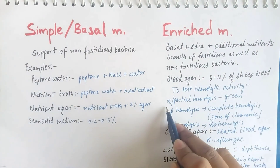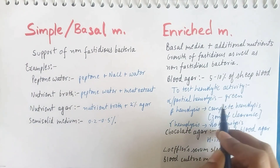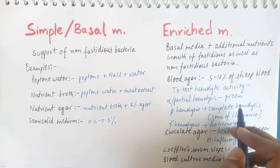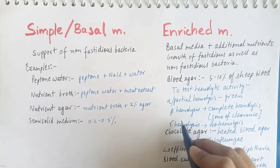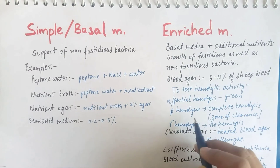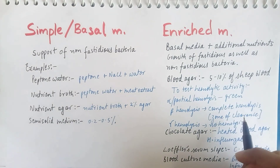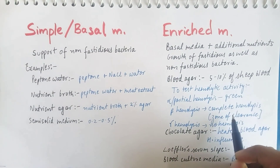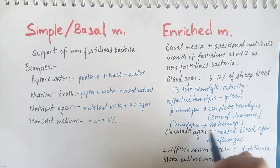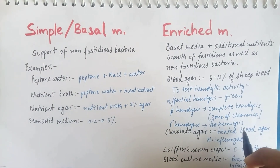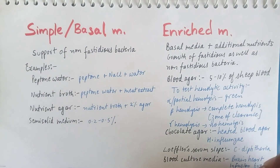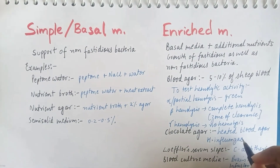The first type of hemolysis noted is partial hemolysis, in which greenish discoloration is seen around the colonies. The second type is beta hemolysis, in which complete hemolysis is seen around the colonies, so a zone of clearance is noted. In gamma hemolysis, no hemolysis is present.